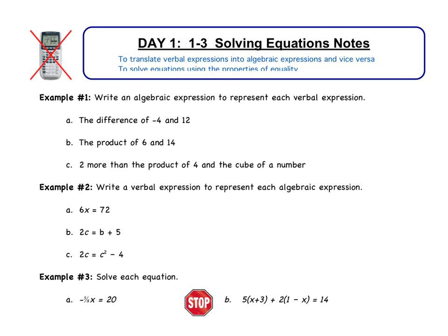Part A: the difference of negative 4 and 12. The first thing is we should know that 'difference' means subtract. So the difference of negative 4 and 12 gives us negative 4 subtract 12. That's your answer. All it says is write an algebraic expression — it doesn't say solve. So just leave your answer like that.